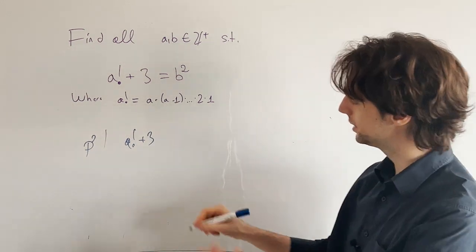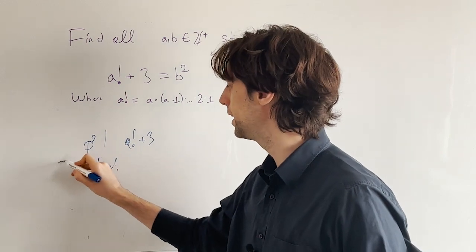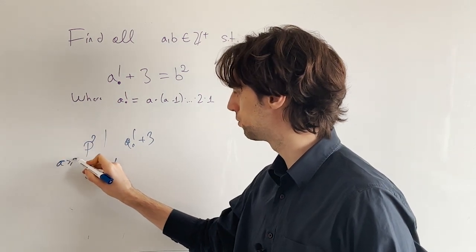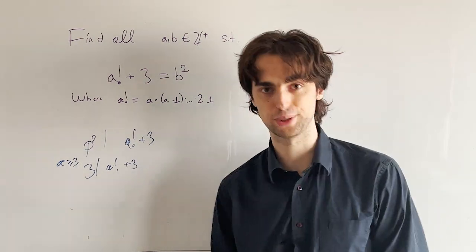And the answer is 3. Because if a is greater than or equal to 3, then 3 divides a factorial, and so 3 divides a factorial plus 3.